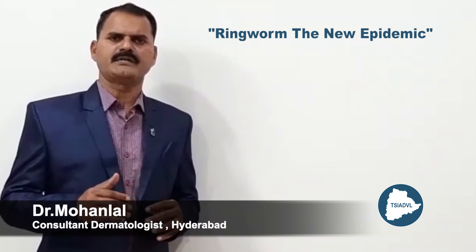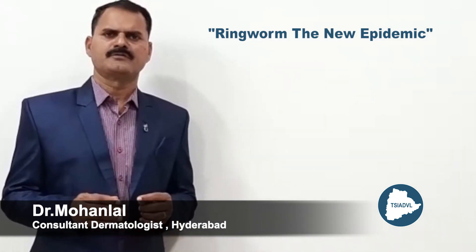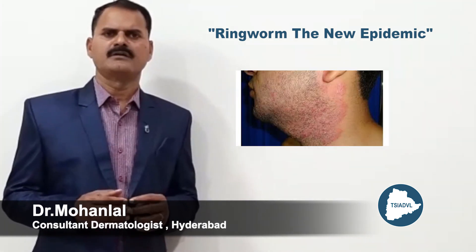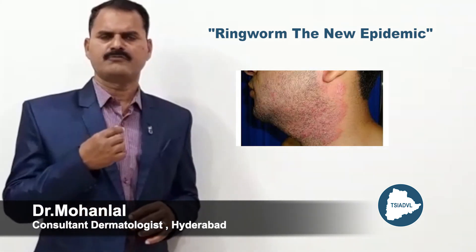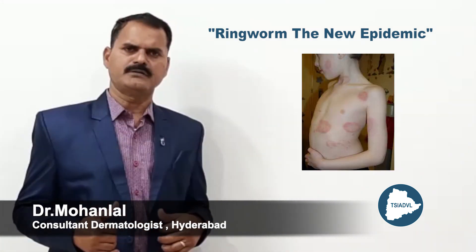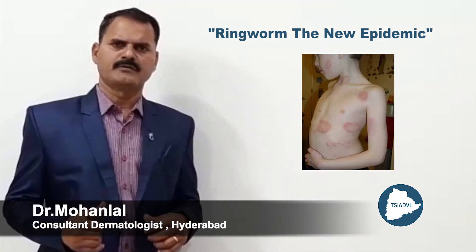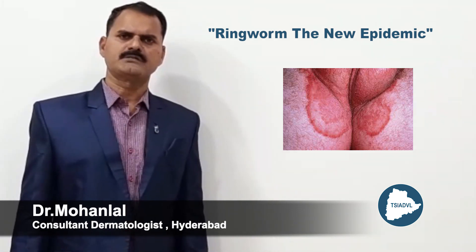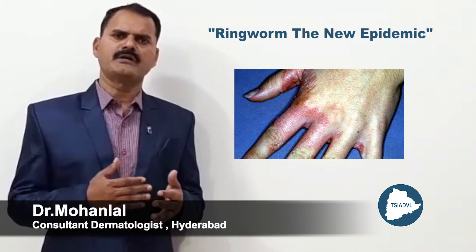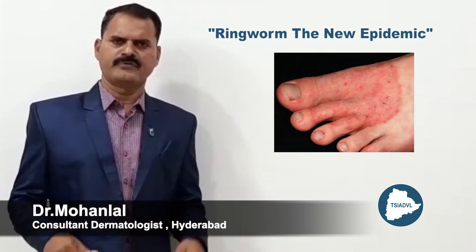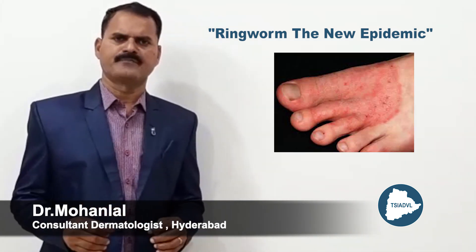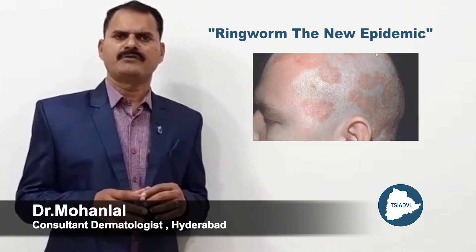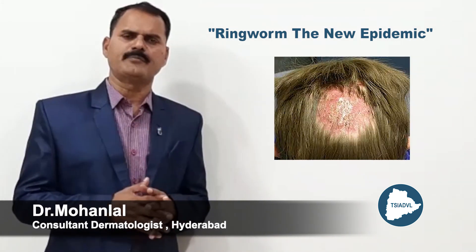Depending on the site involved, we call them by different names. When the face is infected, we call it Tinea Faciei. When the beard is involved, we call it Tinea Barbae. When the body is involved, it is Tinea Corporis. When groins and buttocks, we call it Tinea Cruris. When hands are involved, we call it Tinea Manuum. And when scalp and hair is involved, we call it Tinea Capitis.